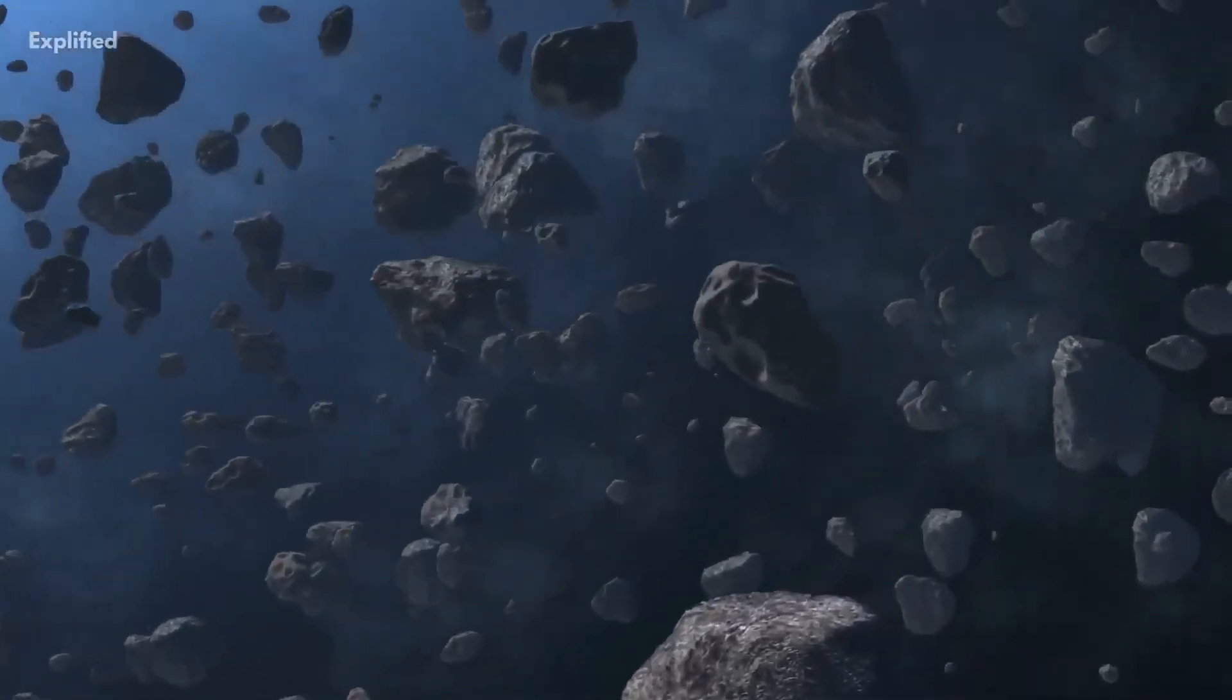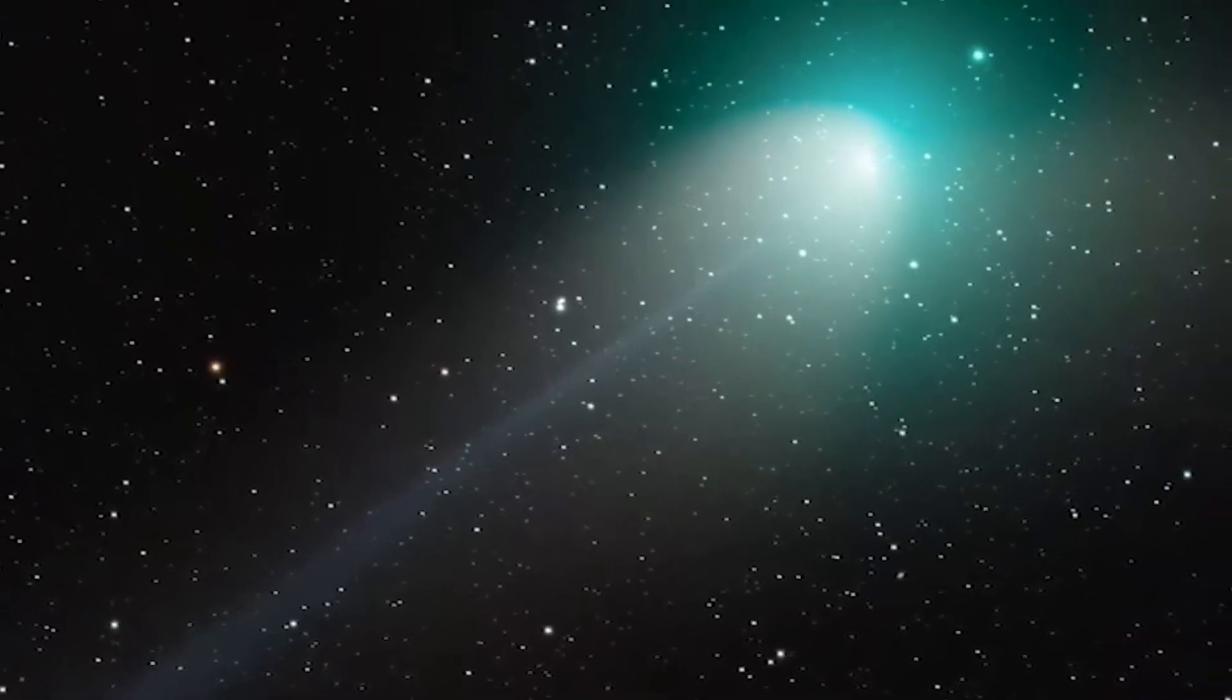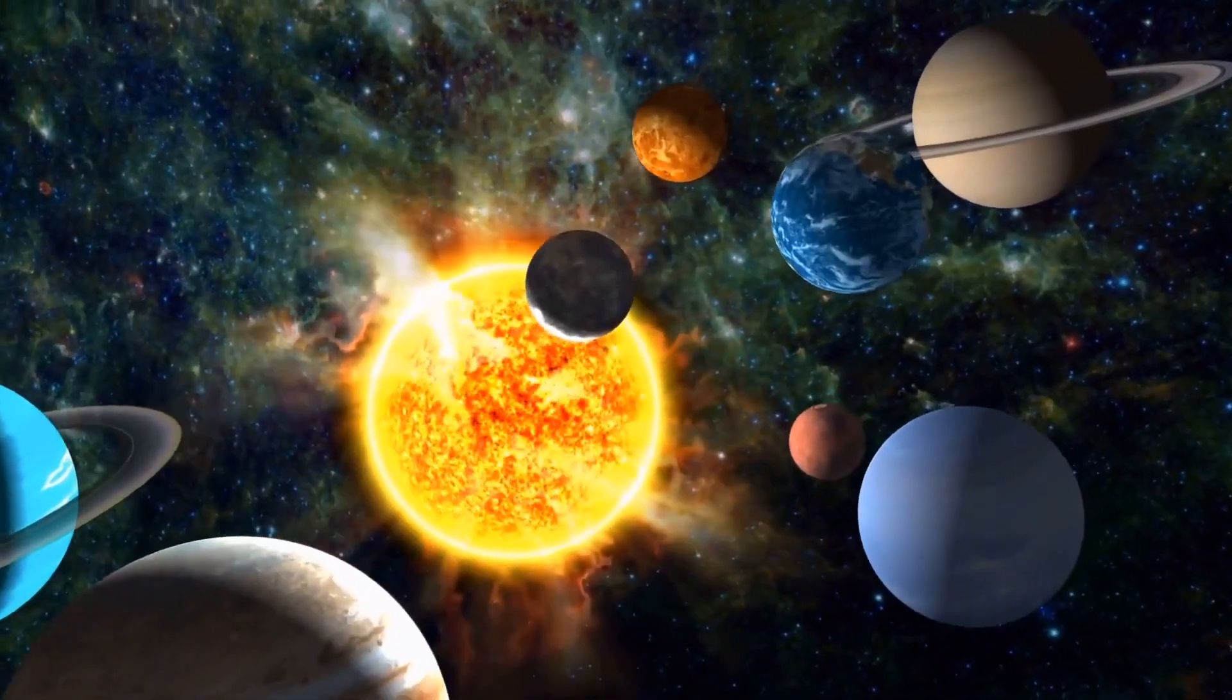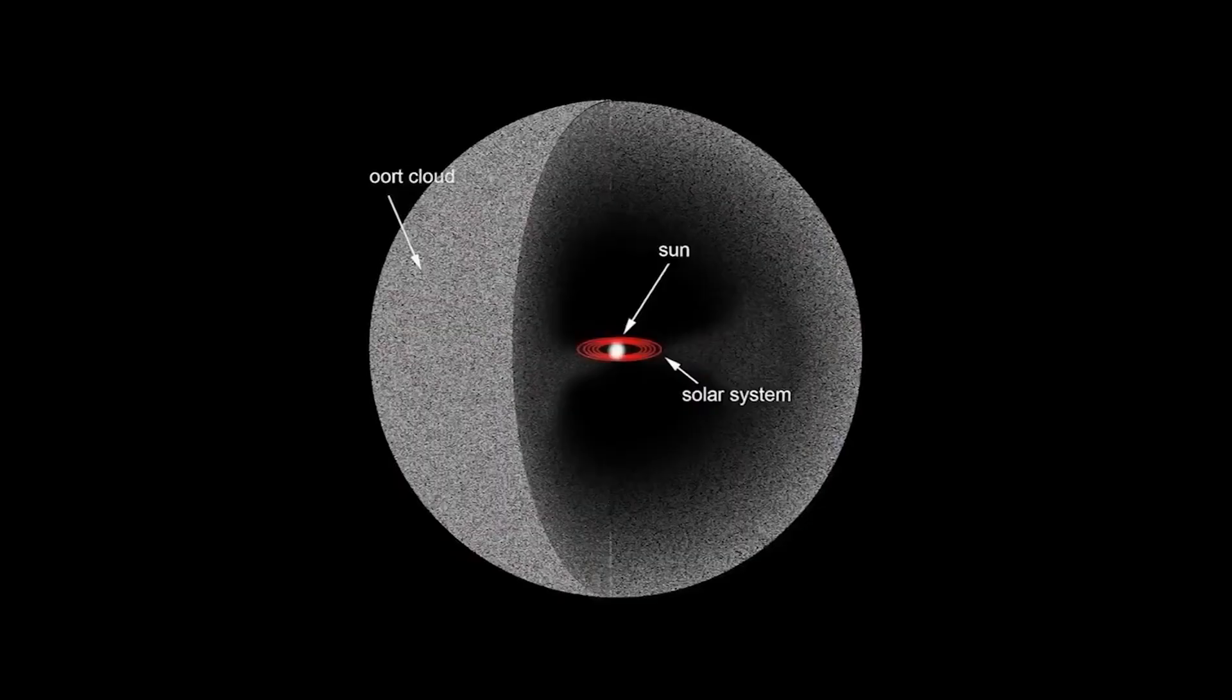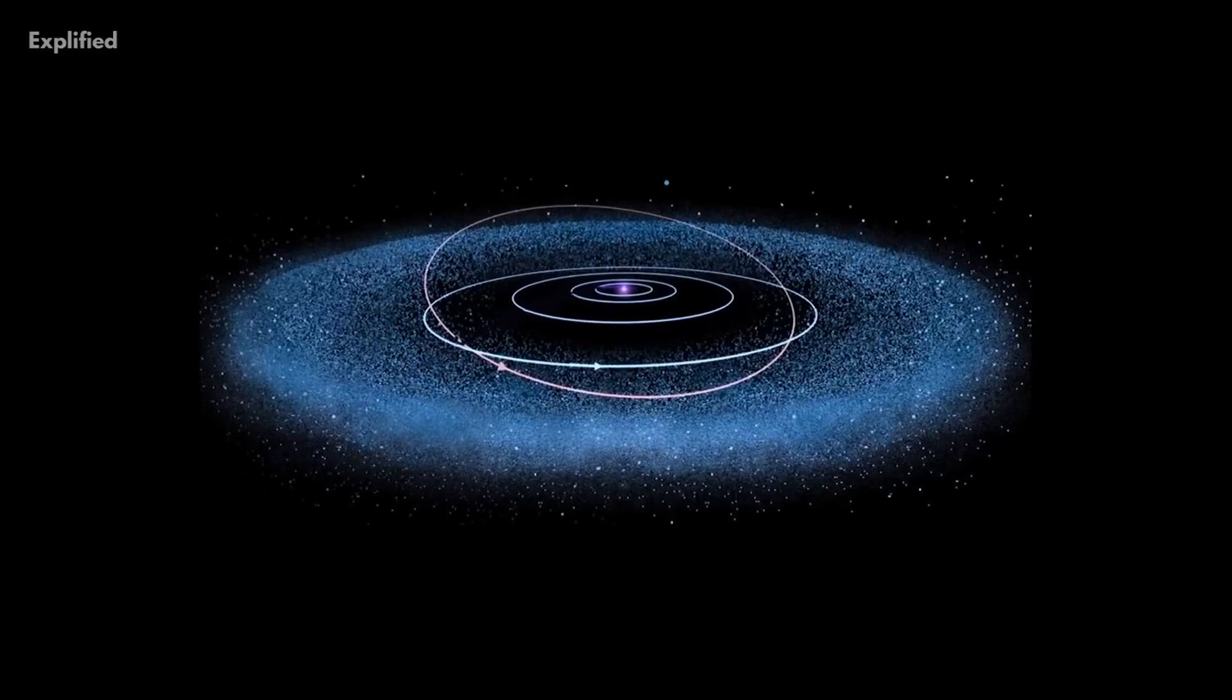Comets are often celestial visitors from the Oort cloud, a region situated in the outermost reaches of our solar system. Despite its distant location, the Oort cloud plays an integral role in our solar system's dynamics.